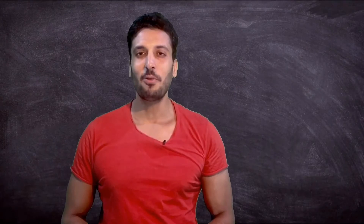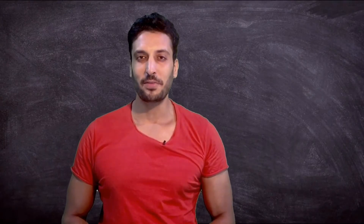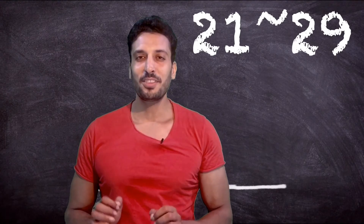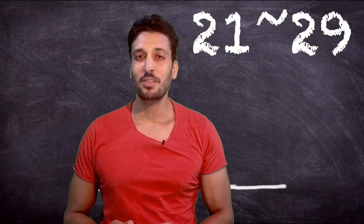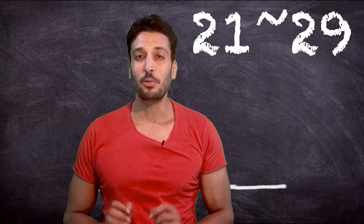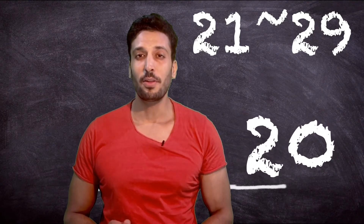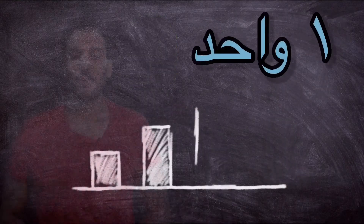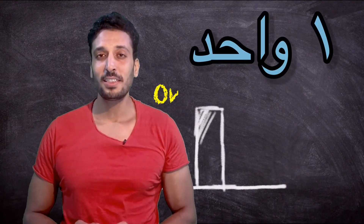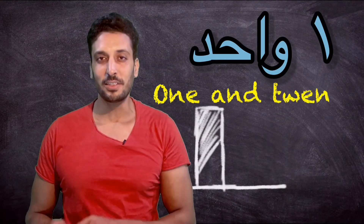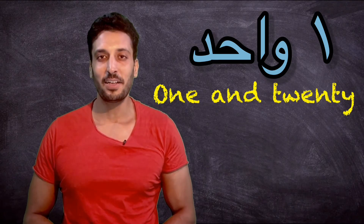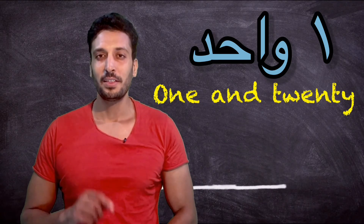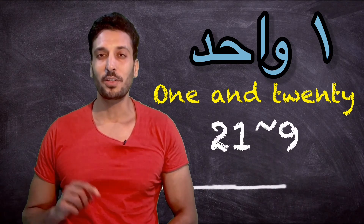Did you notice how we build the numbers from 21 to 29? We don't say 21 starting with 20 — we start with one. So literally we say '1 and 20.' You can apply the same idea to all the numbers from 21 to 99.